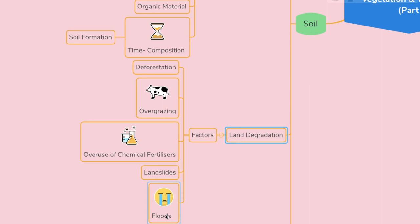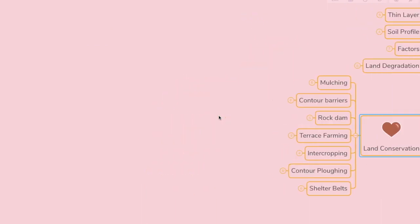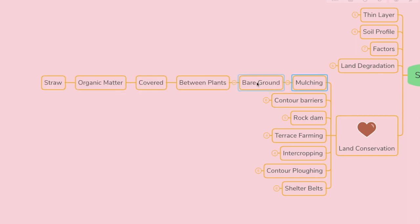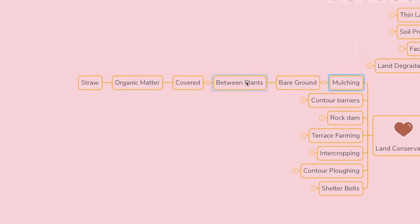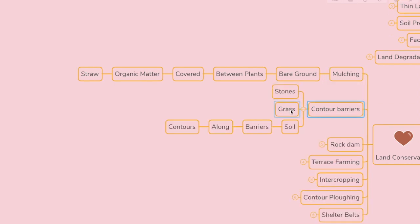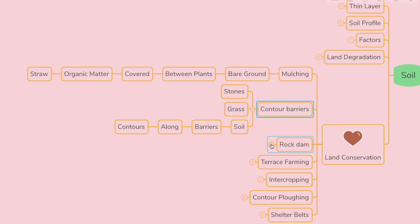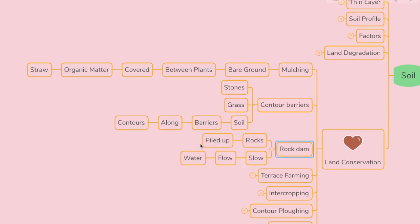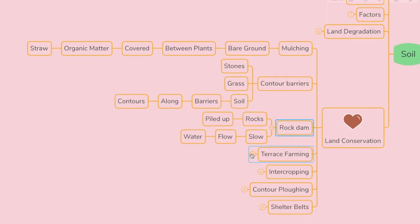The first conservation method is mulching — the bare ground between plants is covered with a layer of organic matter like straw; it helps to retain soil moisture. Second is contour barriers — stones, grass, and soil are used to build barriers along the contour, and trenches are made in front of the barriers to collect water. Third is rock dams — rocks are piled up to slow down the flow of water, which prevents gullies and further soil erosion.